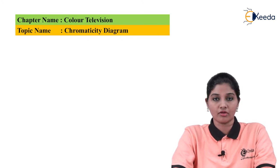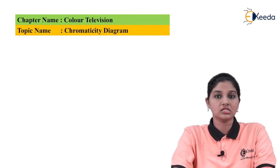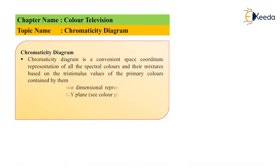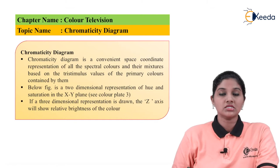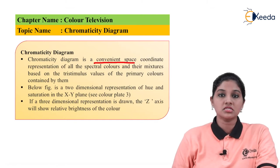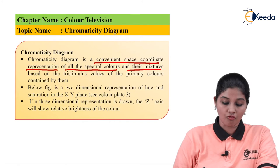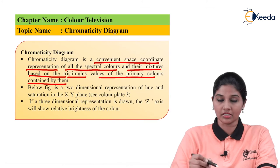Now we are going to talk about the next step of chromaticity, which is the chromaticity diagram. The chromaticity diagram is a convenient space coordinate representation of all spectral colors and their mixtures, based on the tristimulus values of the primary colors contained by them.